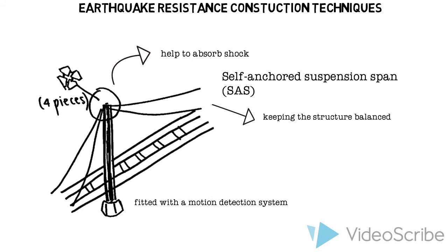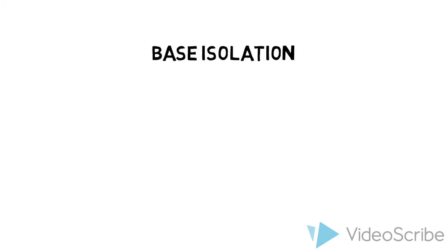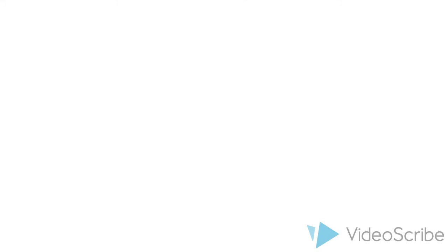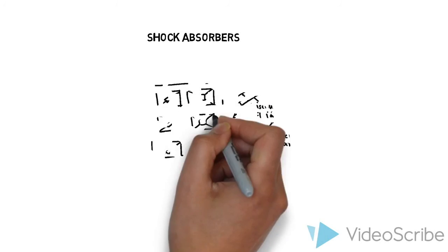The bridge is fitted with a motion detection system. Base isolation is used to reduce acceleration so the base does not jump off the foundations. Shock absorbers help to dissipate the seismic shock.